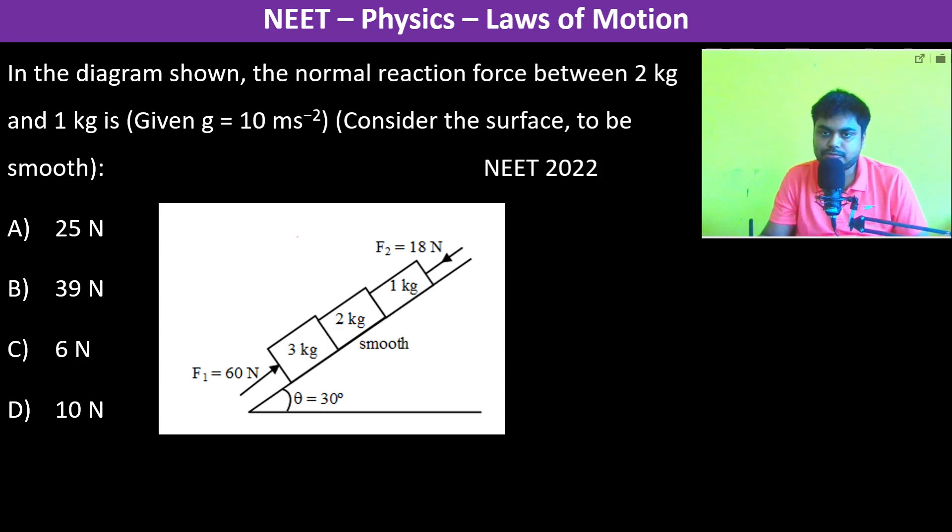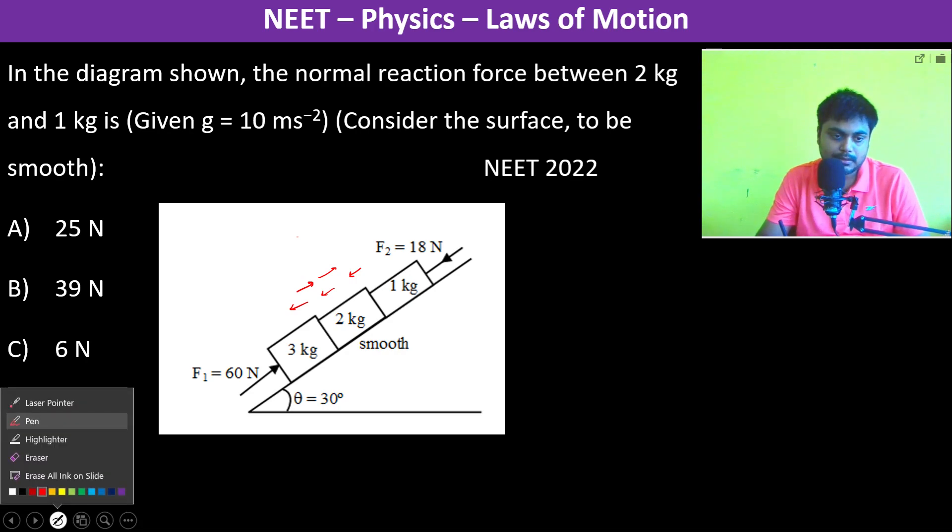In the diagram shown, the normal reaction force between 2 kg and 1 kg is asked. As we can see, if 3 kg goes downwards, then 2 kg will also go downwards and 1 kg will go upwards. Similarly, if going upwards, it's the same thing. Therefore, all three—1 kg, 2 kg, and 3 kg—will be going together.